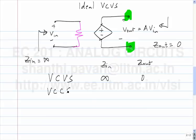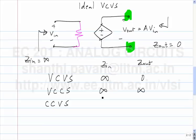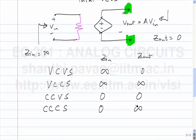For a voltage controlled current source (VCCS), the input impedance must be infinity and the output impedance must be infinity. For a current controlled voltage source (CCVS), the input impedance must be zero — it is like an ammeter in series, and the input resistance of an ideal ammeter is zero — and the output impedance is zero since it is a voltage source. For a current controlled current source (CCCS), input impedance is zero and output impedance is infinite.